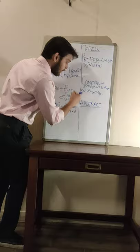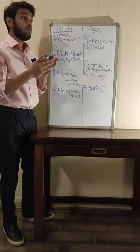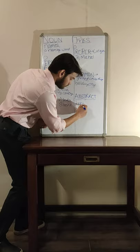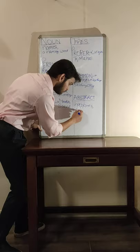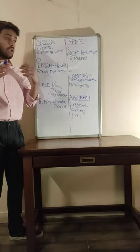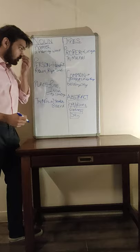Then, abstract nouns. Abstract nouns are those nouns which are used to refer to things which we cannot see, which we cannot touch, which we cannot hear, but we can feel. For example, what can we feel? We can feel happiness, we can feel sadness, we can feel pain. All of these things — happiness, sadness, pain — we cannot touch, we cannot see, but we can feel. So all of these words are abstract nouns.